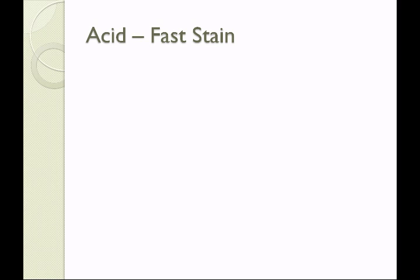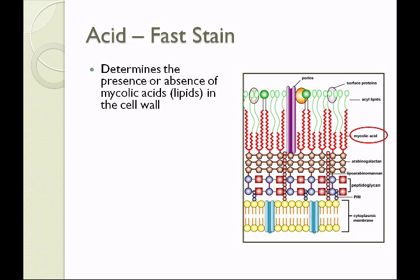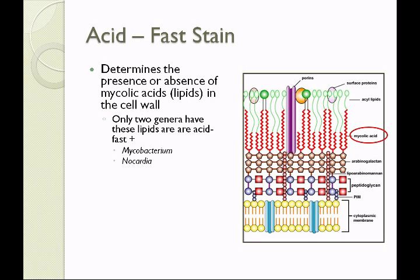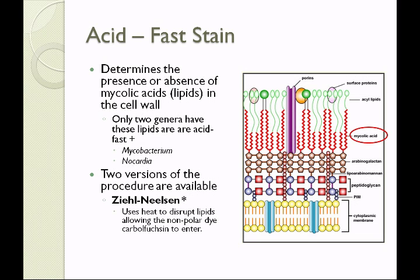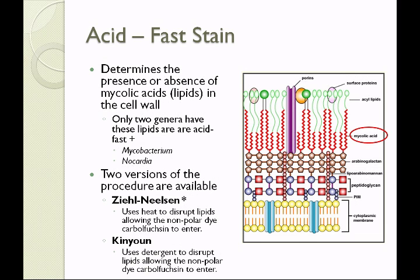The acid-fast stain determines the presence or absence of mycolic acids — certain lipids found in the cell wall. Only two genera of bacteria are acid-fast: Mycobacterium and Nocardia. Two versions of the procedure are available. The Ziehl-Neelsen stain uses heat to disrupt the lipids and allows the non-polar dye Carbolfuchsin to enter the cell wall. The Kinyoun stain uses detergent instead of heat to disrupt the lipids, then Carbolfuchsin enters the cell wall.